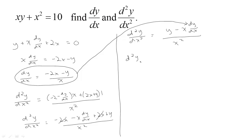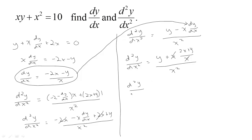Substituting in, the second derivative becomes y minus x times (-2x - y)/x, all over x squared. Notice there's a negative that factors out and cancels with the negative in front of the x, and then the x in the top and bottom cancels, leaving us with y plus 2x plus y all over x squared.